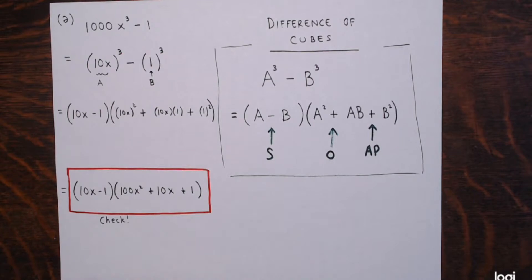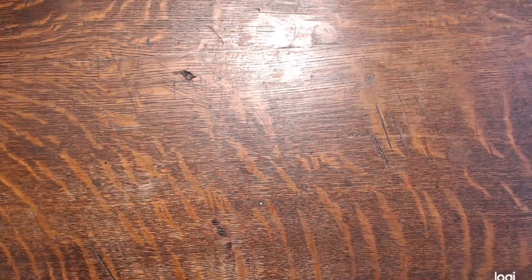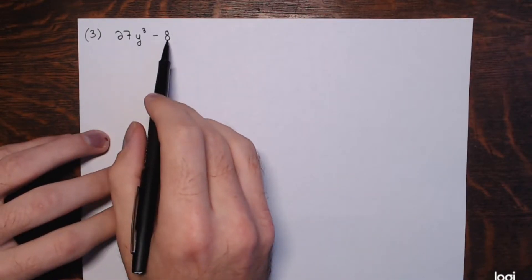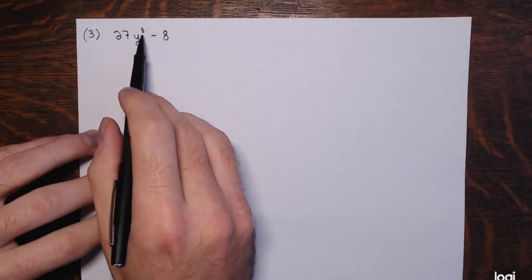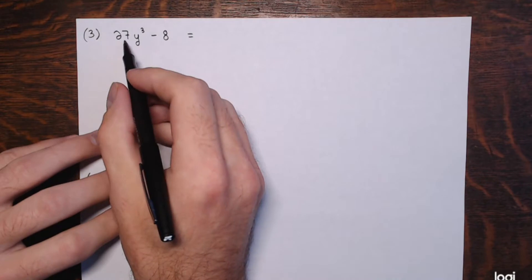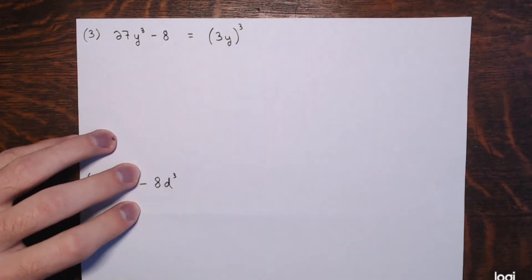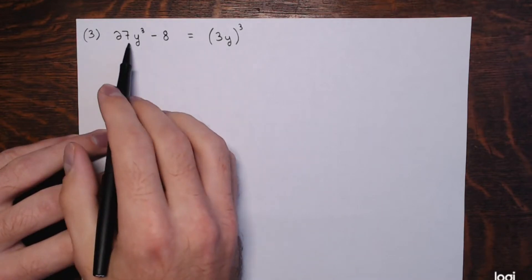I've got a few more examples that will be either a sum of cubes or a difference of cubes — it should be obvious because if there's a minus sign in between, it's a difference of cubes, and if there's a plus sign, it's a sum of cubes. It looks like both of these next ones are differences of cubes. We have two terms, a minus sign — a difference — and the powers are multiples of three. For 27y cubed, that's the same as 3y to the third power, since 3y times 3y times 3y is 27y cubed.